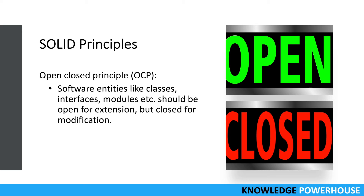The next principle is the Open/Closed Principle — a very important and commonly used principle. Software entities like classes, interfaces, and modules should be open for extension but closed for modification. Once you have defined a class, you should not be modifying it frequently. Instead, if a new feature is required, you extend the class using inheritance, making changes in the child class, which ensures existing clients of the parent class are not affected.